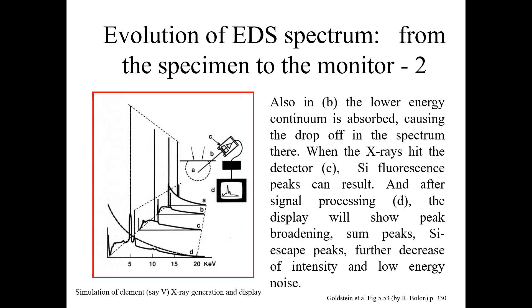That is how we have the evolution of the EDS spectrum. You can see how we started from A and proceeded with different factors affecting the spectrum and EDS analysis. You can clearly visualize the difference from A to B and how the spectrum changed, and we discussed the possible reasons for those changes. That's all for this lecture series on EDX. Thanks for watching — see you in the coming lecture for another type of characterization and instrumentation.